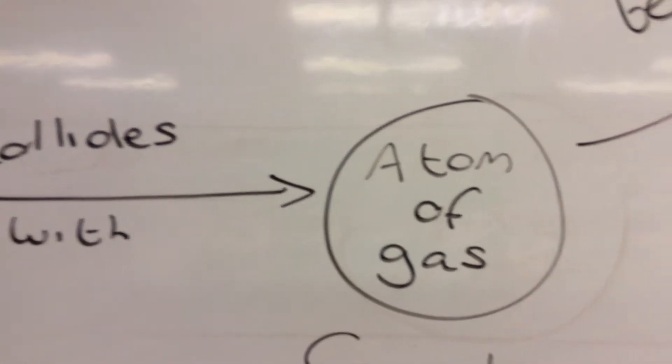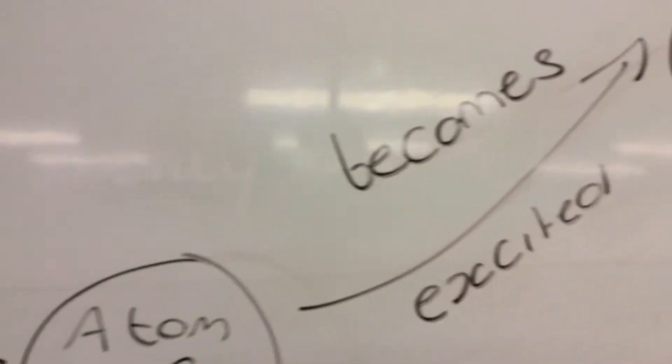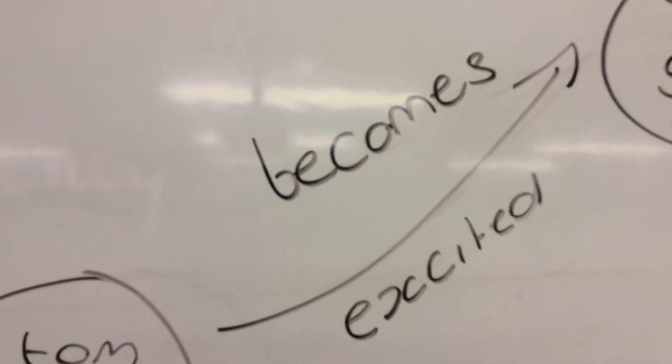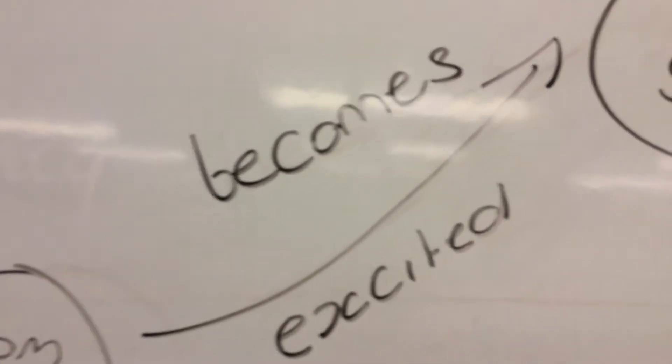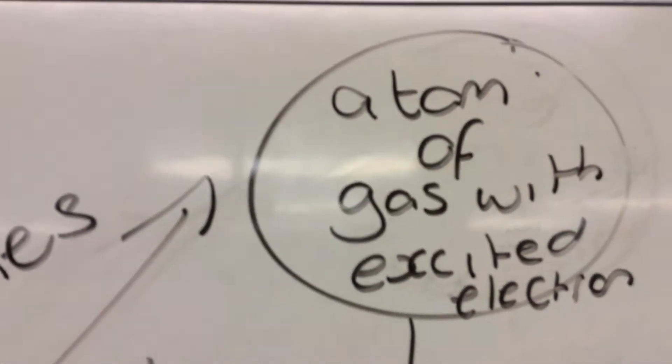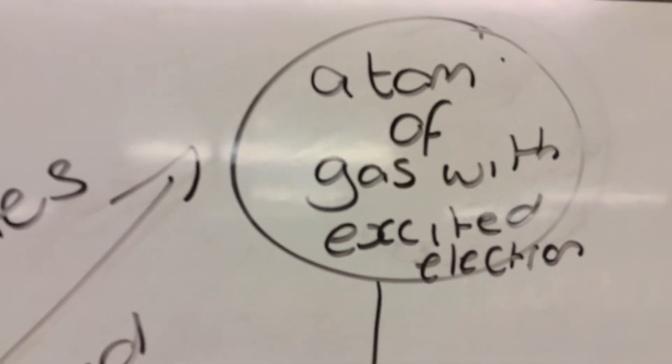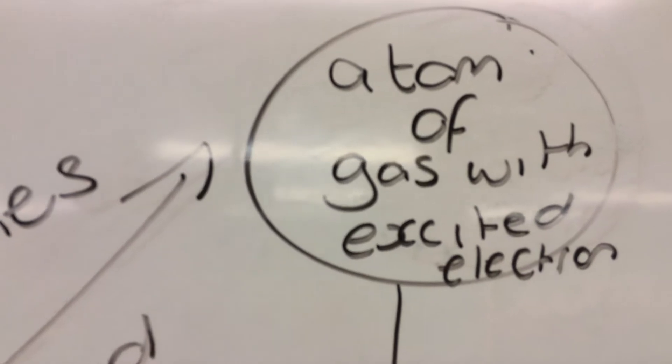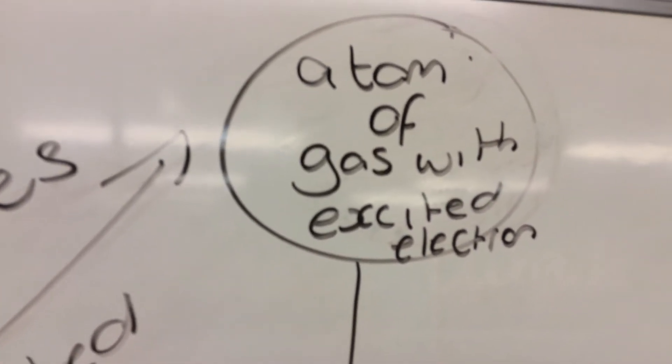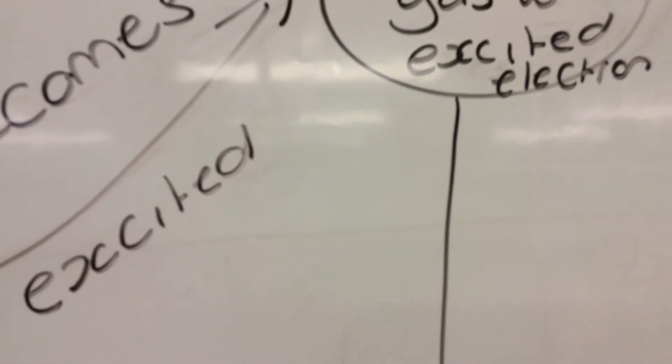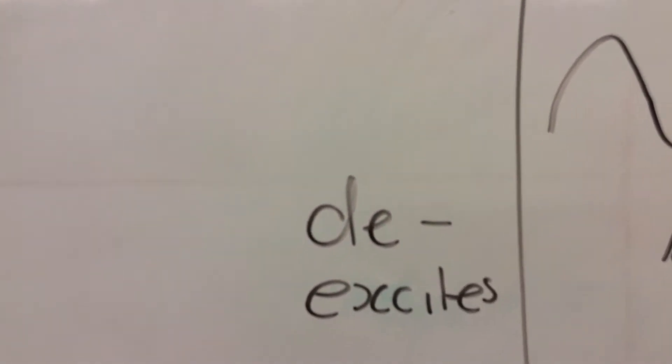So instead, the atom, having been hit by an electron, becomes excited. Perhaps it's watching this video. And what that means is, we get an atom of gas with some excited electrons. Now fairly obviously, what then has to happen is the electron has to drop back down to its ground state.